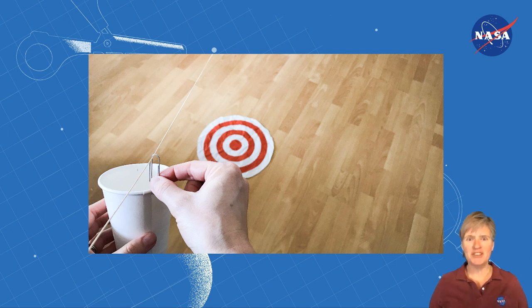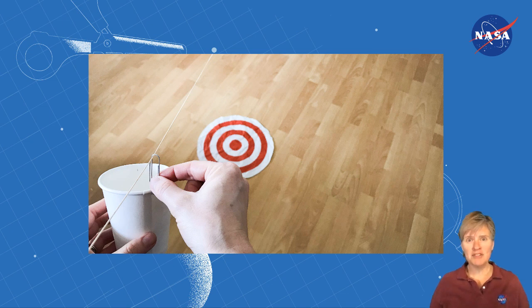Use the paper clip to hang your spacecraft cup from the zip line. Make sure the cup and paper clip can slide freely from the top of the zip line to the bottom.